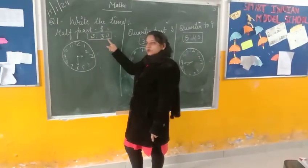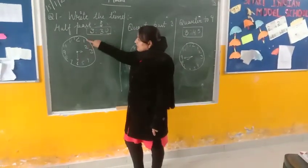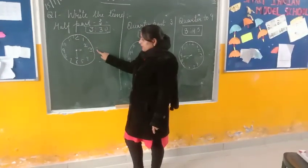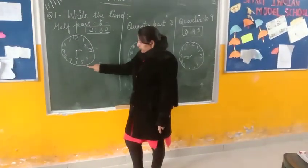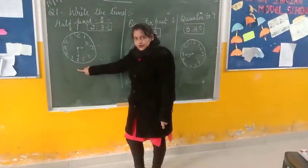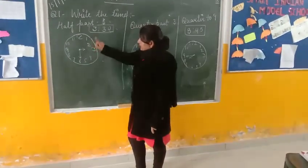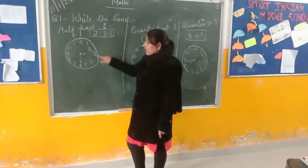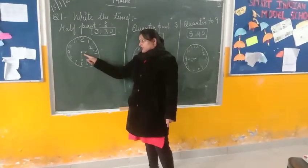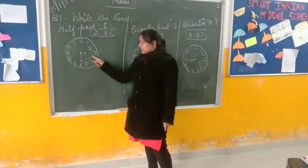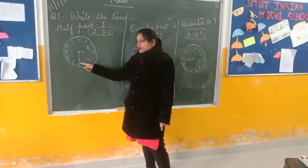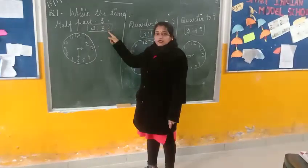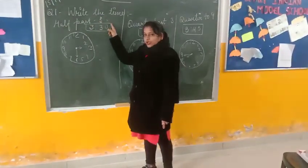Write the time half past 3, means 3:30. Everyone knows 1 is equal to 5 minutes, 2 is equal to 10, 15, 20. When 3:30 is going on in your watch, your short hand shows the 3 and long hand shows the 6. It shows your full time — 3:30, half past 3.